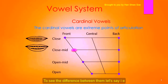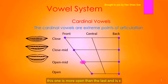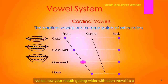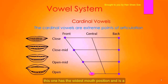To see the difference between them, let's say 'ee, ee.' The next one is more open than the last, and it is 'ee.' Copy the mouth position and try to pronounce it. To compare them: 'ee, ee, ee.' Notice how your mouth gets wider with each vowel. The last front vowel has the widest mouth position and is pronounced 'aaa' — let's try it.